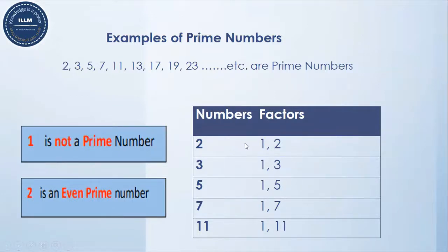So that's why two is a prime number. Two is the only number which is an even number as well as a prime number, so it is called an even prime number.